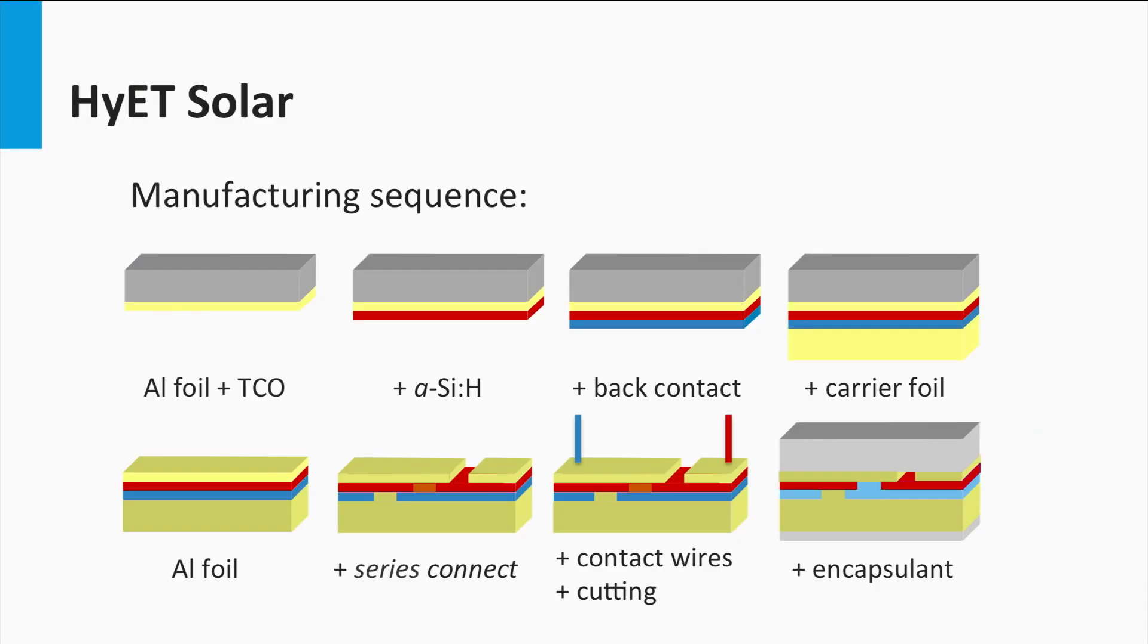Another advantage of thin film PV technology is that you have an option to deposit it on flexible substrates. Here I give an example of the HyET Solar Company, who develops a technology that is deposited on a temporary aluminum foil. The entire solar cell is processed on the foil and encapsulated at the back side. Then the temporary substrate is etched away and the front side is encapsulated.